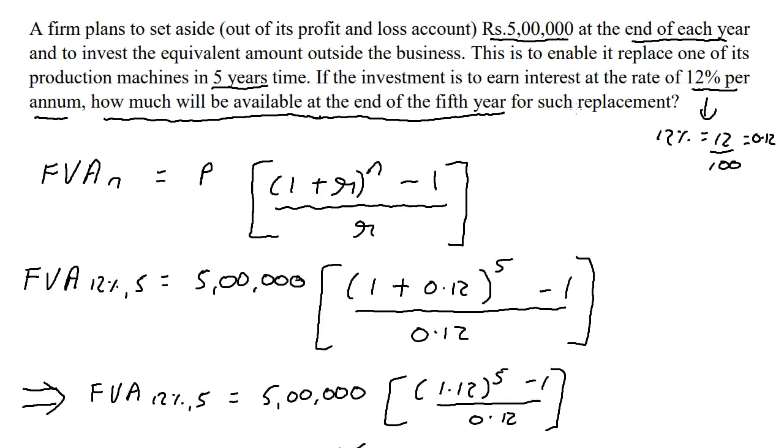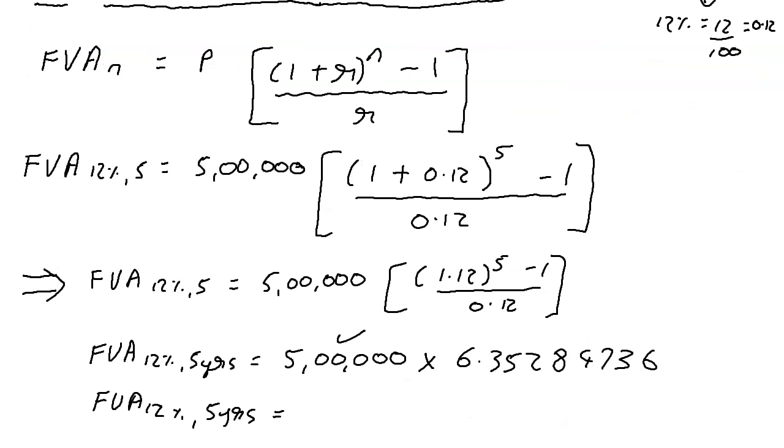Their question is how much will be available at the end of the fifth year. The amount that will be available at the end of the fifth year is this number. So that is rupees 31 lakh, 76 thousand, 423.68.